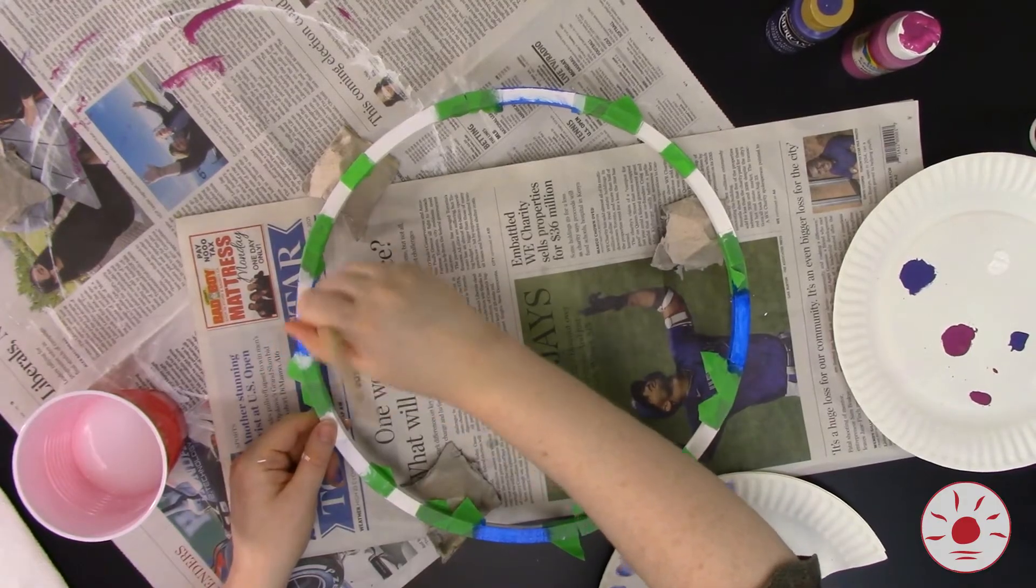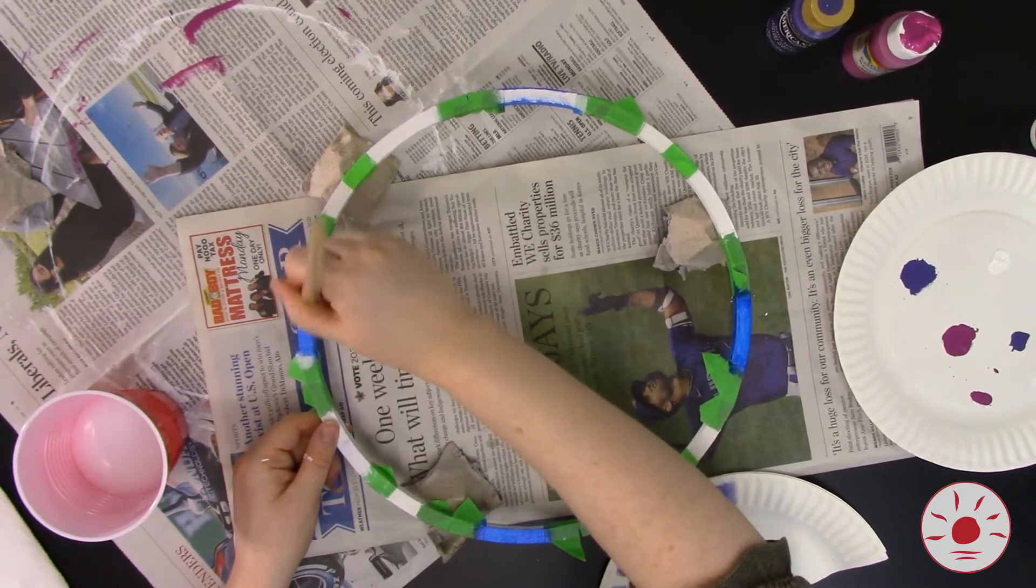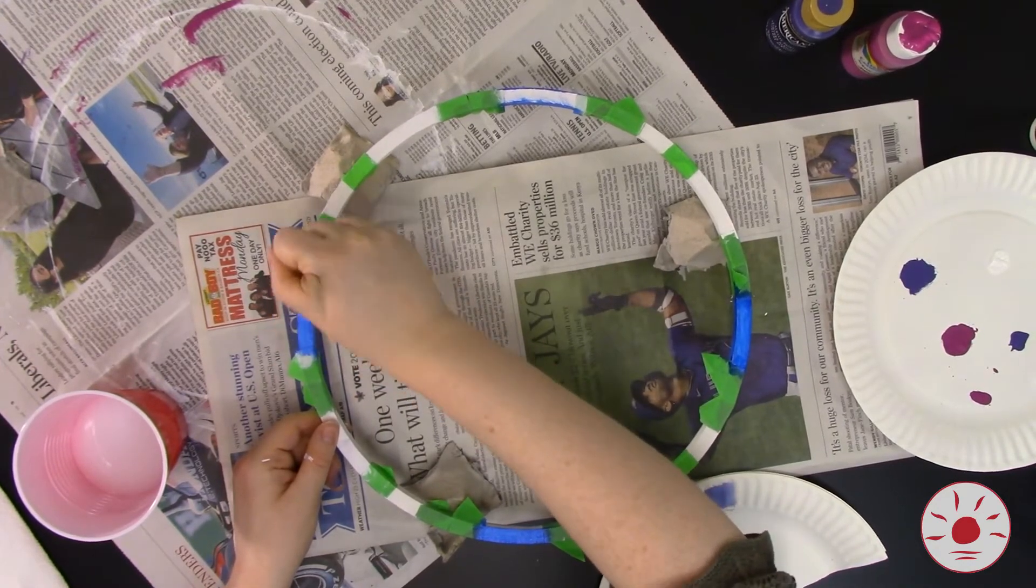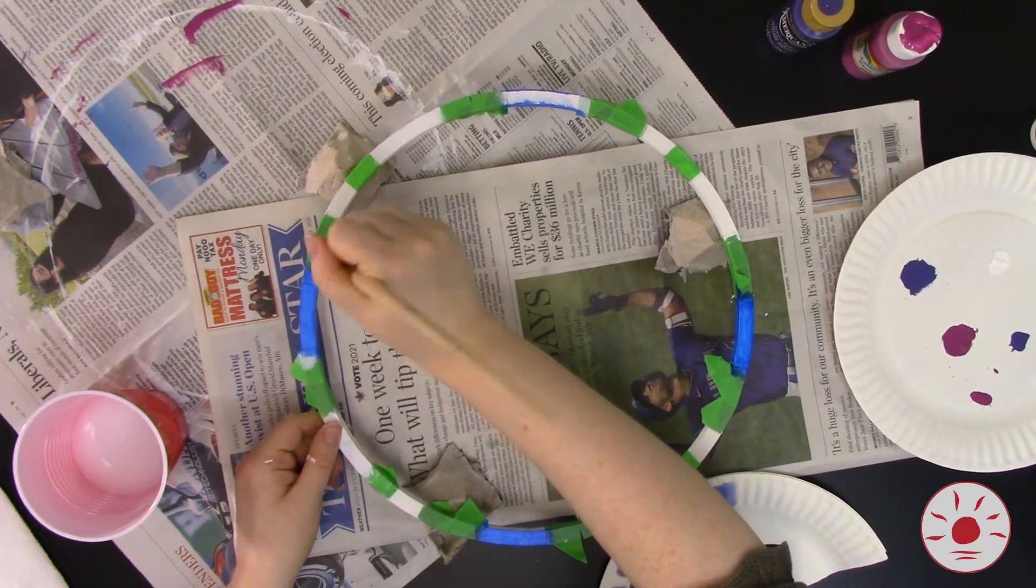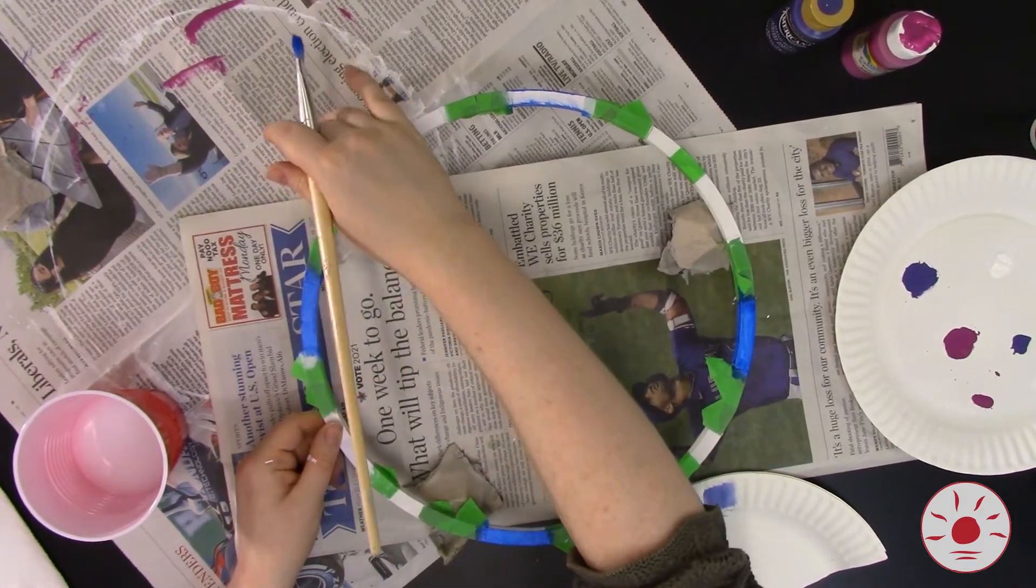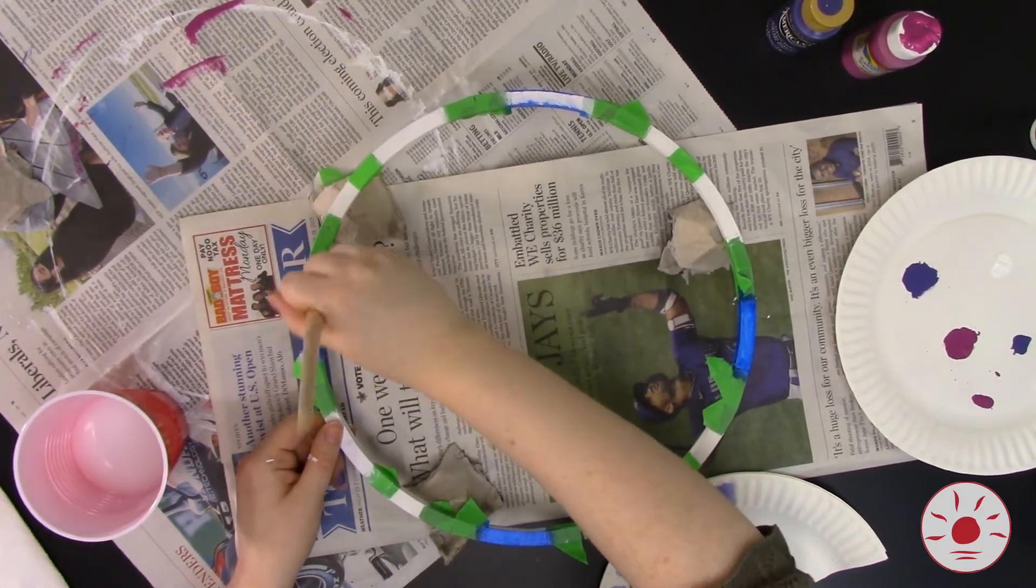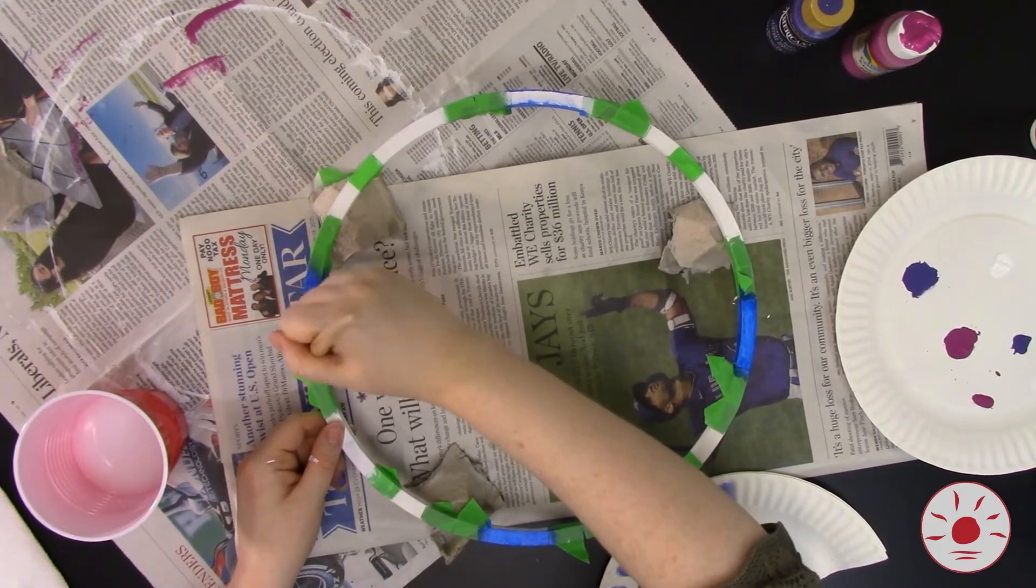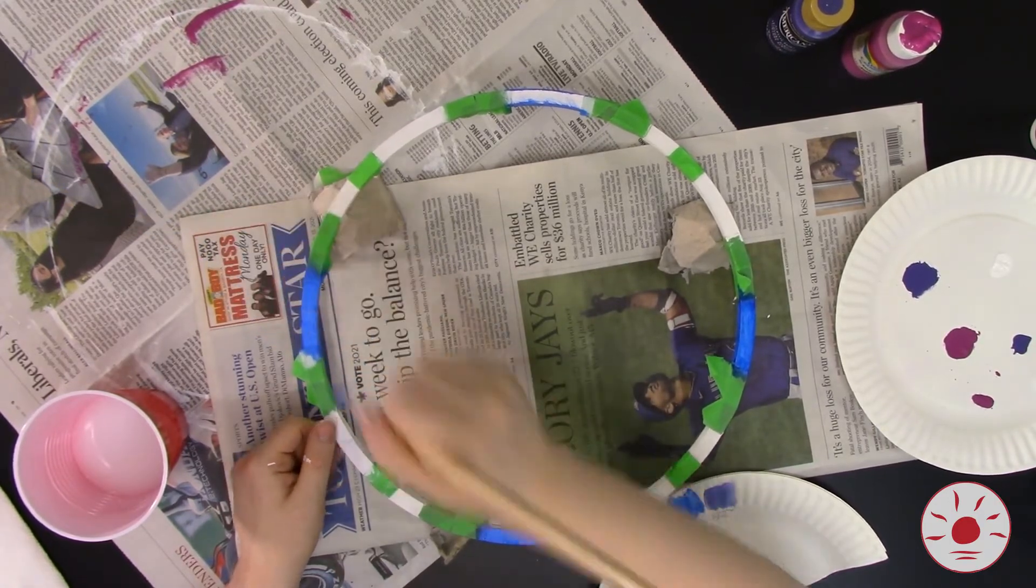Next, we're going to paint the sections in different colors. So as you can see, I've already painted the hoop white before I made my little measurements. This is going to help the colors that I paint over top of it really pop.